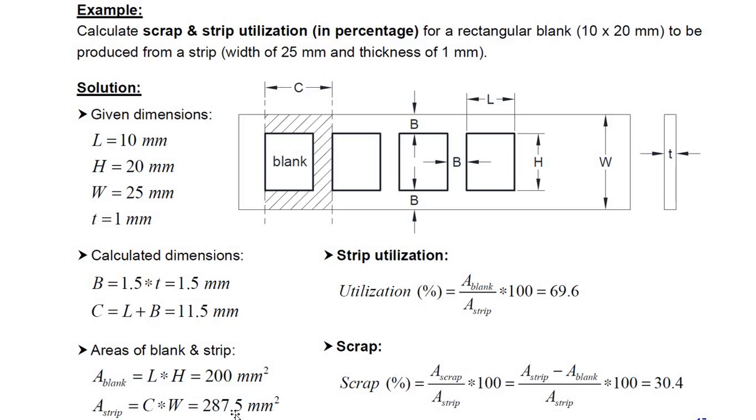So it comes around 287.5 millimeters square. So if we compare these two areas, area of the blank versus the total area required to create one single blank, we will get about 69.6% utilization of the total strip area. Whereas rest of the part, about 30.4%, we are losing as scrap. So this is how with this layout we will be able to predict the percentage utilization and percentage scrap for this type of layout.